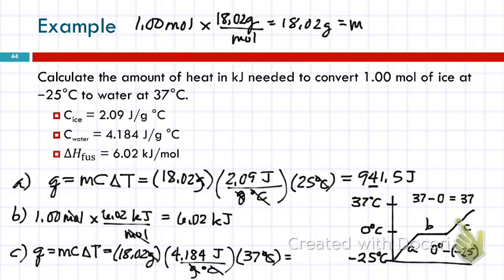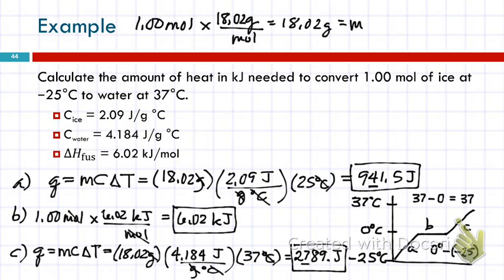So, 18.02 grams. Times 4.184. Times 37. This one also has two significant figures. 2, 7. Write down two extras. 8, 9. It's 2,789.64016. I want to write down the digits at least to the decimal point so that I don't change my number very much. And that's joules. So, I've got this one. And I've got this one. And I've got this one. I need to add them together.